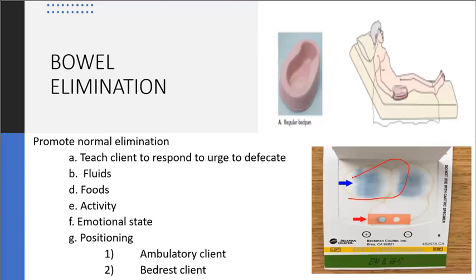Normally you should have a negative Guaiac — no blood in the stool. The stool should also be negative for fat, mucus, pus, and pathogens.